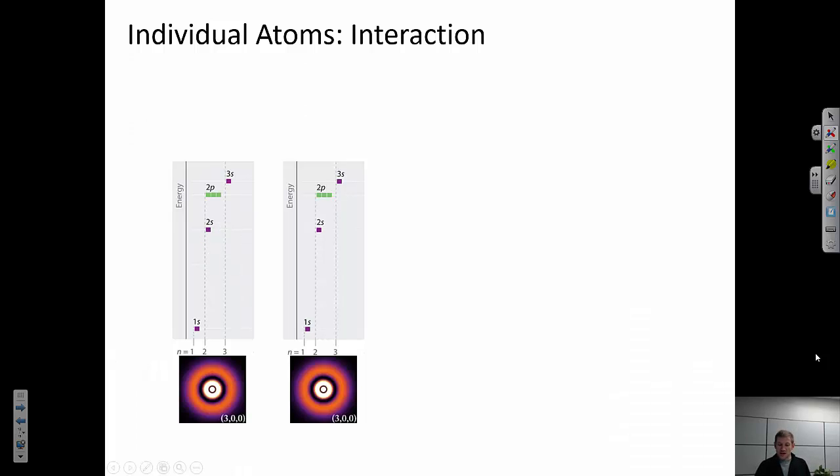So let's think about two individual sodium atoms. They have 1s, 2s, 2p, and 3s orbitals. If they're far apart, they each have their own discrete energy levels. And electrons can fill any of these energy levels. And in the sodium atom, we have two electrons in the 1s, two in the 2s, six in the 2p, and one in each of the 3s orbitals.